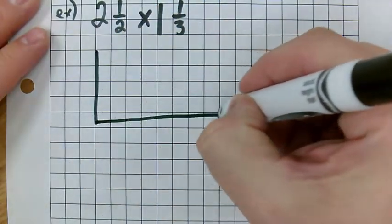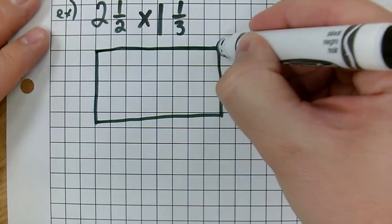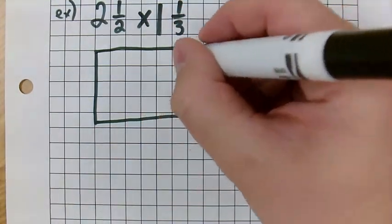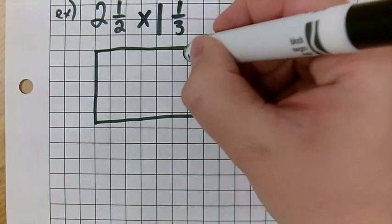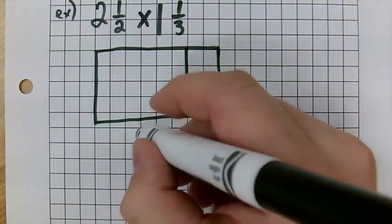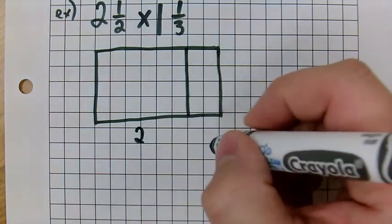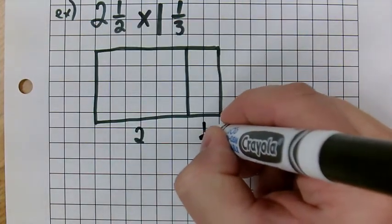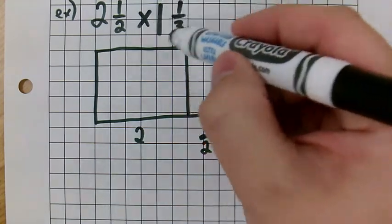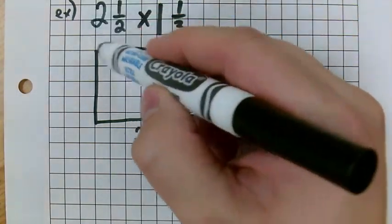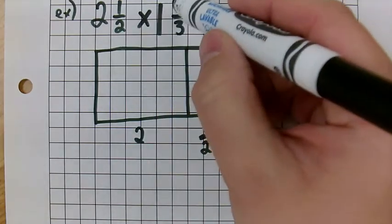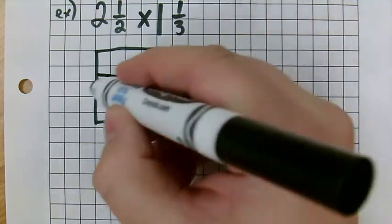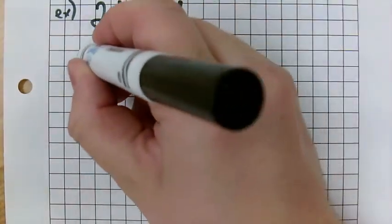But what we're going to do here is we're going to draw a rectangle. Sorry about my drawing. And we're just going to kind of break it up into pieces here where the width here is 2, for example. And then this is half. And then we're going to break up here, our other fraction. So, our first fraction was 2 and 1 half. And then our other one we're going to break up here so that we're going to be left with 1 and 1 third.